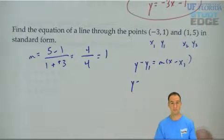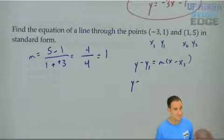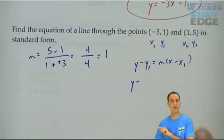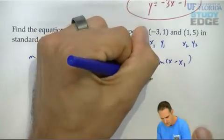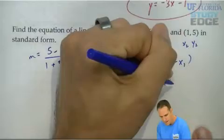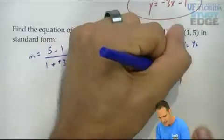y minus... It doesn't matter which point. I'll choose 1 comma 5. y minus my y coordinate equals m x minus my x coordinate.